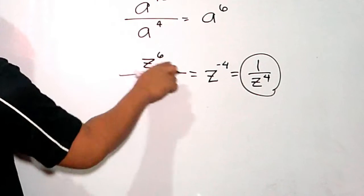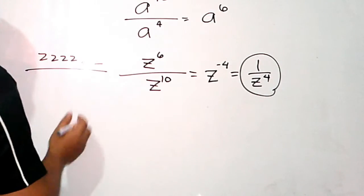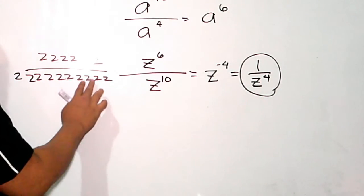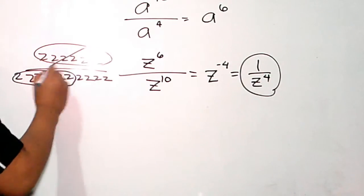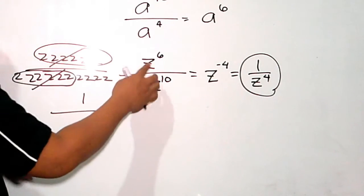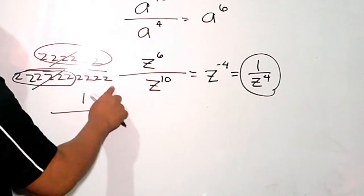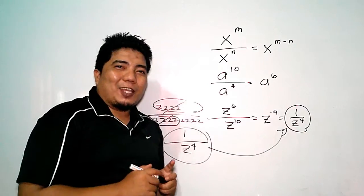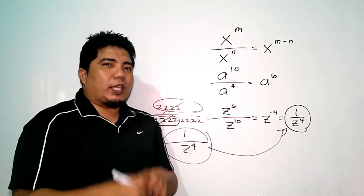To clarify: z to the 6th means six z's, and z to the 10th means ten z's. You cancel six of the z's in the numerator with six from the denominator, leaving 1 in the numerator and z to the 4th in the denominator. This is the basic foundation of simplifying rational algebraic expressions using the quotient rule.